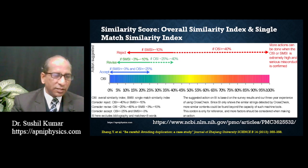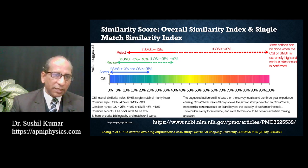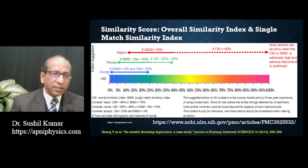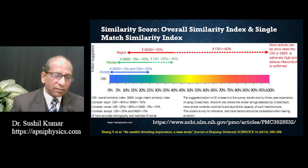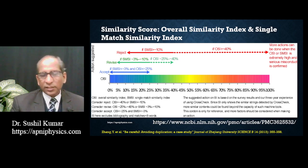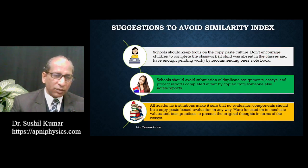When overall similarity index is less than 25 percent and single match similarity index is less than or equal to 3 percent, the document is acceptable. Based on these criteria, a document can be accepted, rejected, or revised. We have to be careful because here you observe the single match similarity index — that is, the individual source contribution you see in your report. Suppose overall similarity index is 40 percent, but single match similarity index from each source is one, two, or three percent.